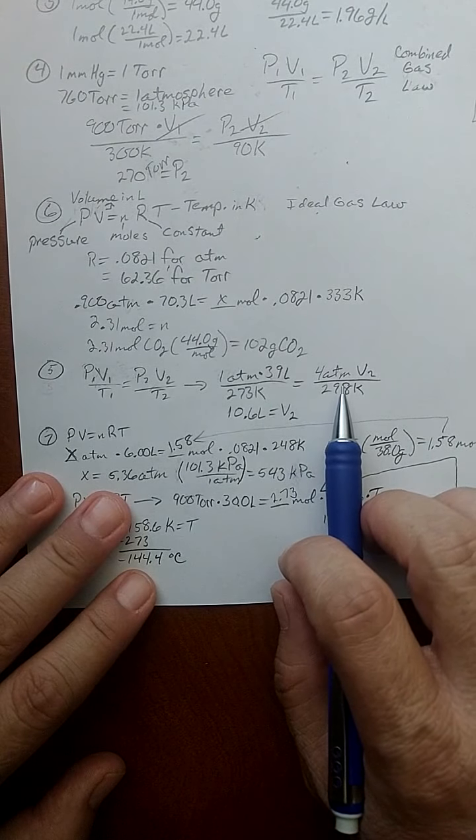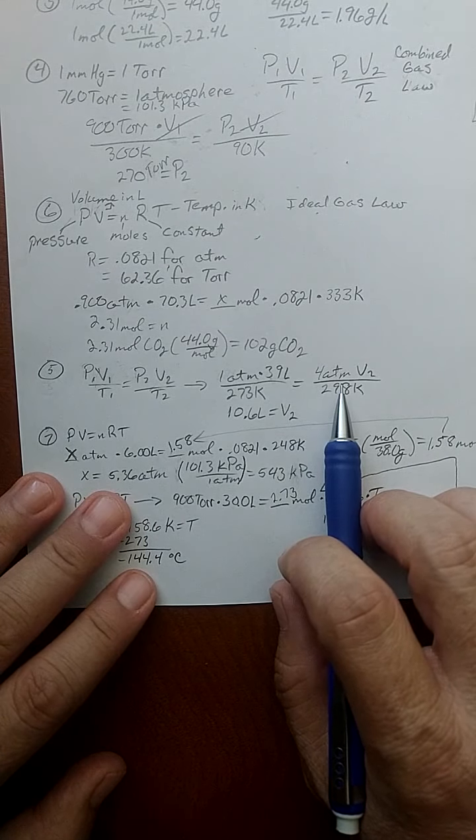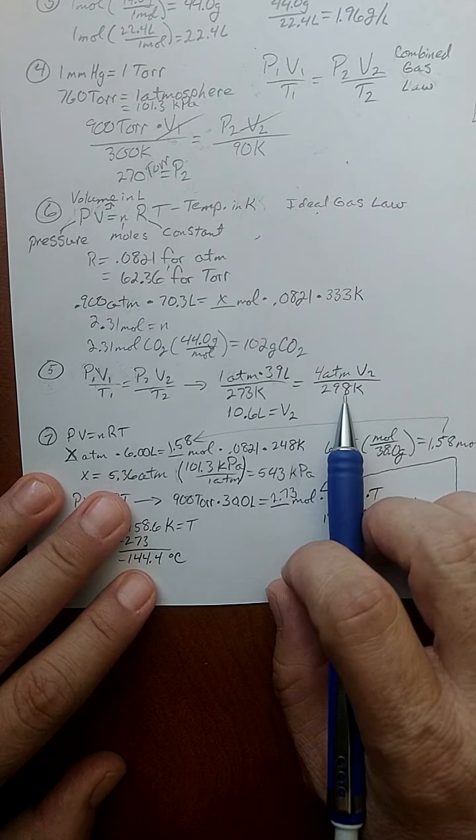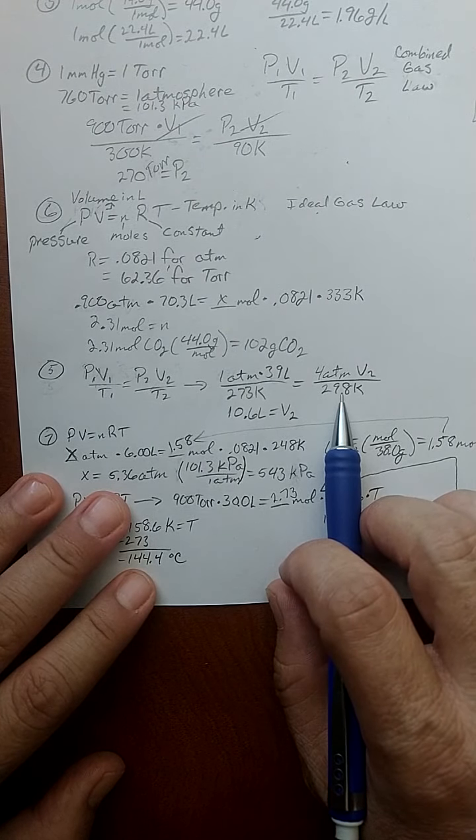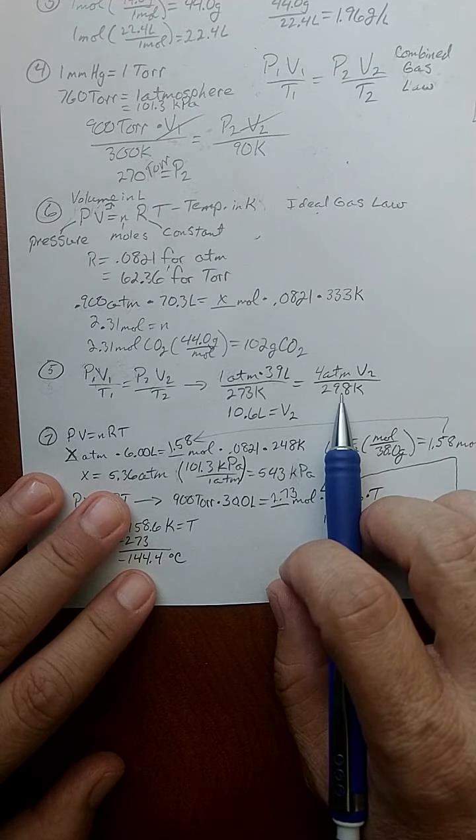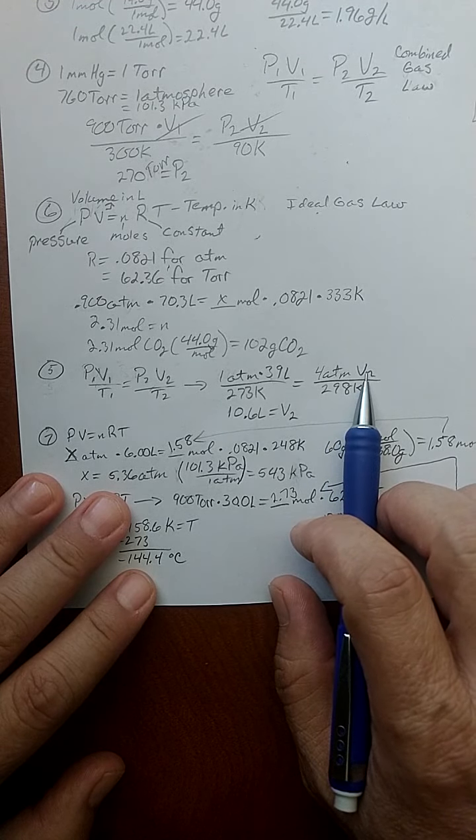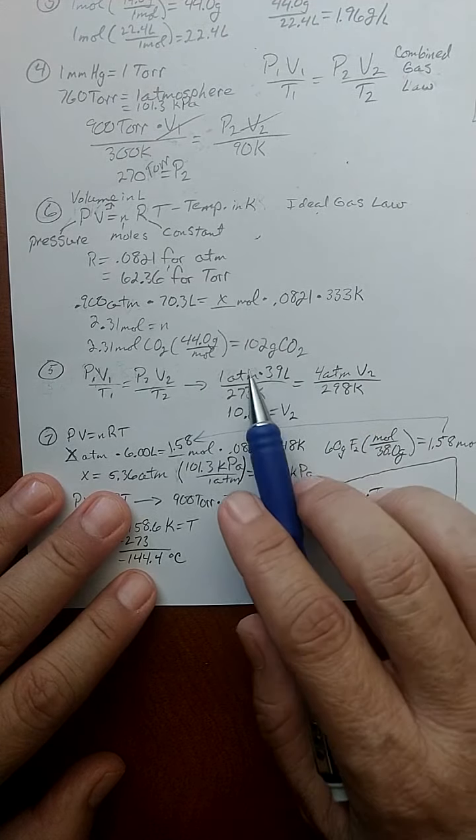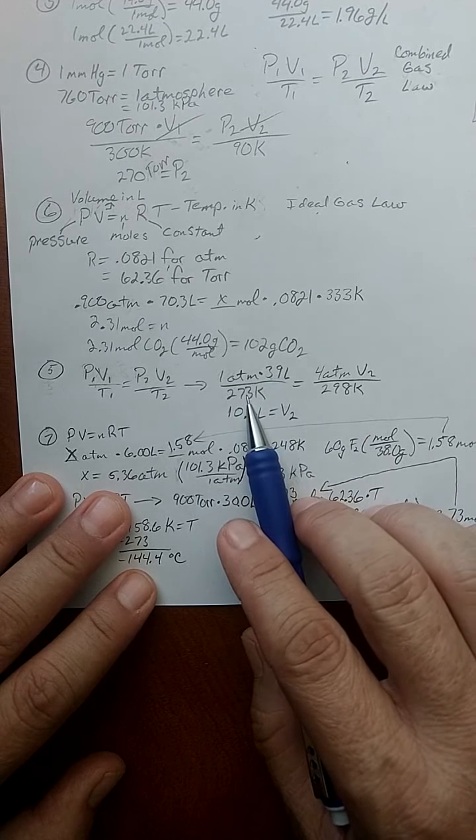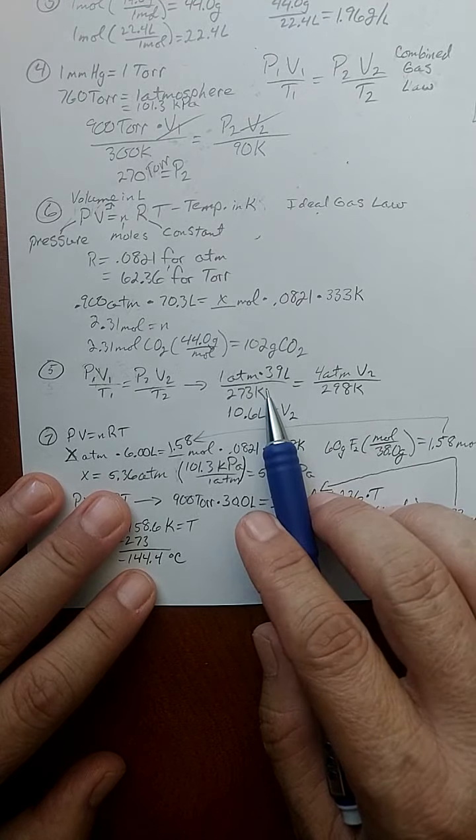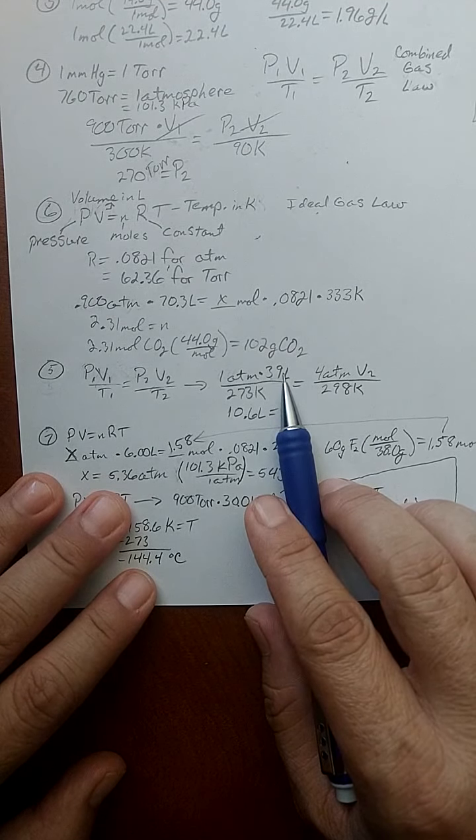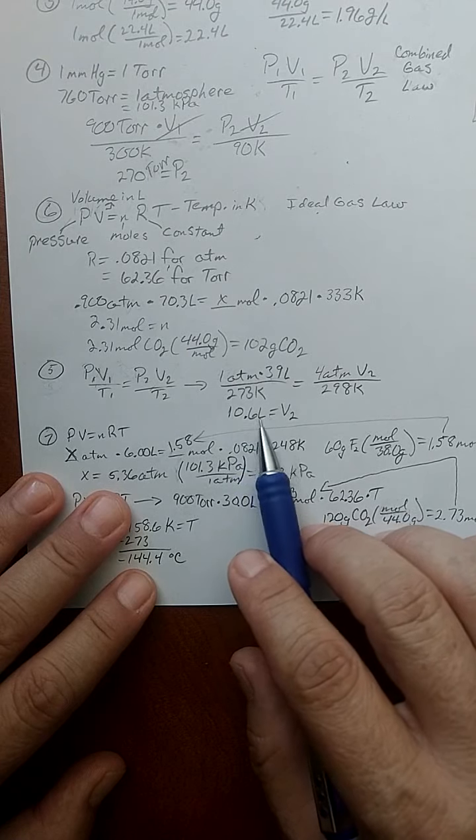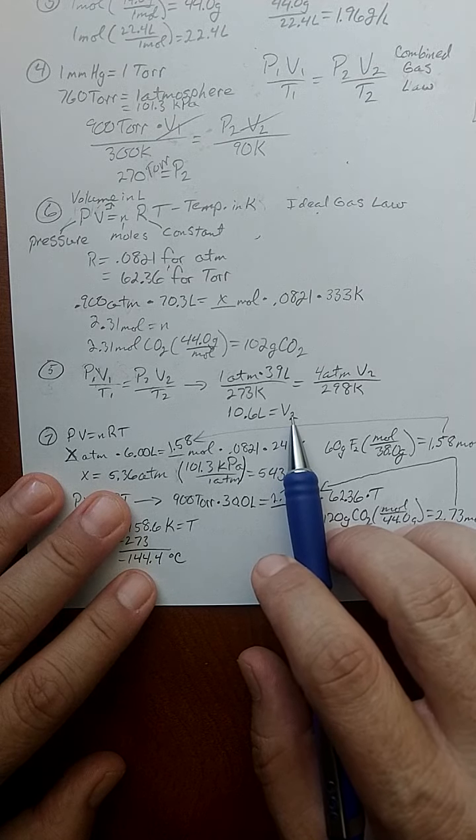The second situation has four atmospheres and 25 degrees Celsius, and I had to add 273 to get 298 Kelvin. I'm solving for the new volume. So 1 times 39 divided by 273 divided by 4 times 298 gives me 10.6 liters for the second volume.